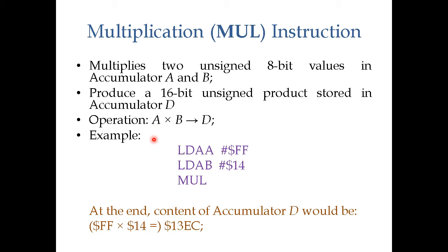Here is a three-line instruction to show how multiplication works. In the first line, we loaded FF into accumulator A. In the second line, we loaded 14 into accumulator B. Once we do the multiplication, we just write MUL because it is an inherent instruction — all you have to do is write MUL and it automatically multiplies A and B. After these three lines, D would have 13EC, which is the multiplication of FF and 14. That means accumulator A will have 13 and accumulator B will have EC.